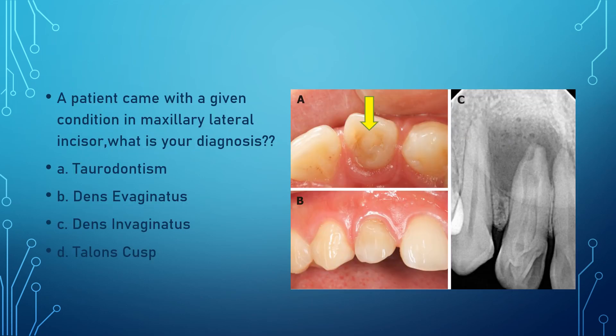The next question: a patient came with a given condition in the maxillary lateral incisor — what is your diagnosis? The options were taurodontism, dens evaginatus, dens invaginatus, or talon cusp. Correlating both clinical and radiographic findings, the radiograph shows a structure just like a tooth within a tooth, so the answer is dens invaginatus, that is dens in dente.